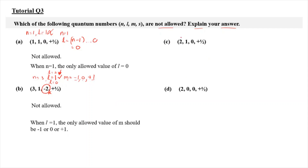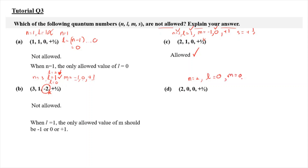For C, when n equals 2, l equals 1 — which is fine. When l equals 1, m can be negative 1, 0, or plus 1, so m here is correct, and s can be plus half or minus half, so that's also okay. This n, l, m, s is allowed. For D, n equals 2, l equals 0, m equals 0 — correct — and s equals plus half, so this one is also allowed. This is how you analyze the n, l, m, s quantum number and give the reason if it is not allowed.